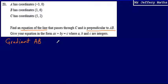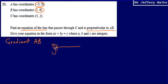To work out the gradient of AB, I'm going to take coordinate A and coordinate B and put them into an X, Y table to make it a little more familiar. Coordinate A, negative 3, 0, has an X coordinate of negative 3 and a Y coordinate of 0. Coordinate B is 1, 6.